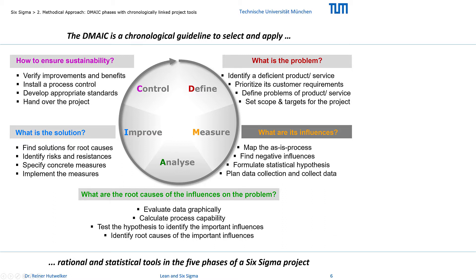A process management plan is then installed with control charts to monitor the process and with countermeasures for deviations that occur. New standards for the process are developed and communicated. Finally, the project is handed over to the process owner.